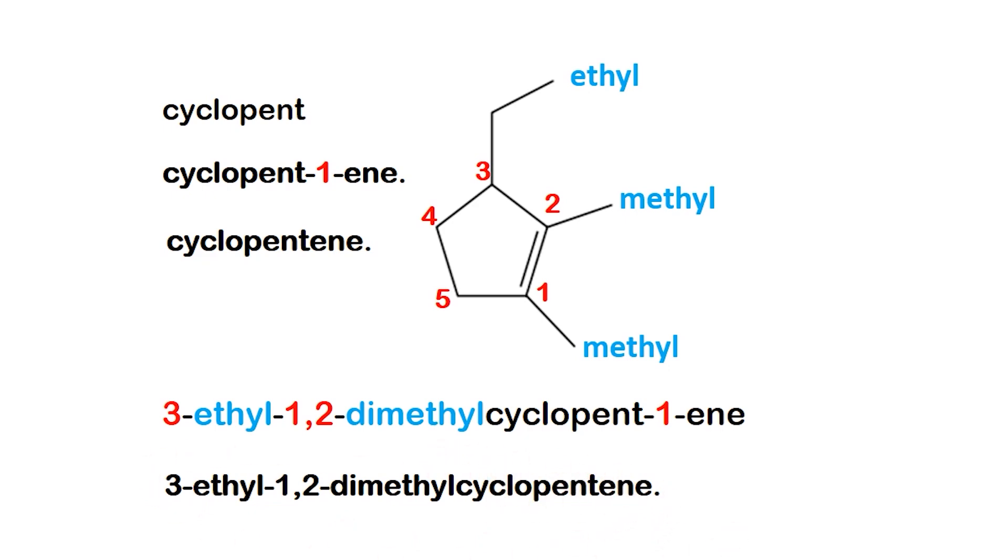And that's it. Naming becomes simple when you follow the same steps. Find the parent, number the double bond, add the substituents, and put them in order. Stick to this system, and you'll master it in no time. See you in the next lesson.